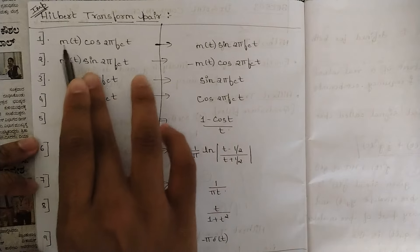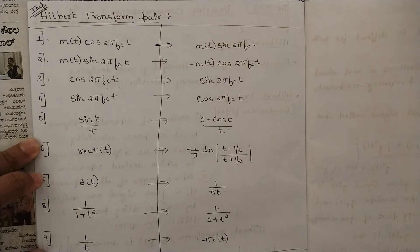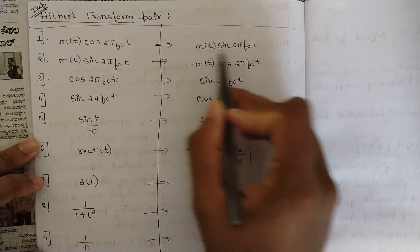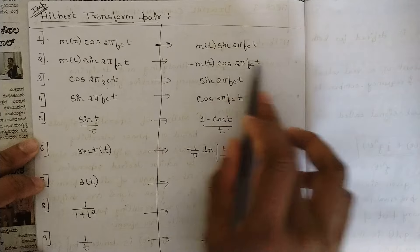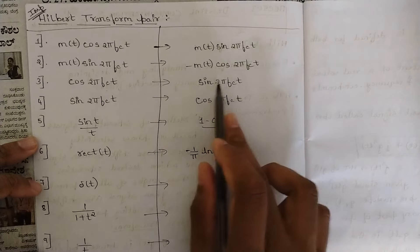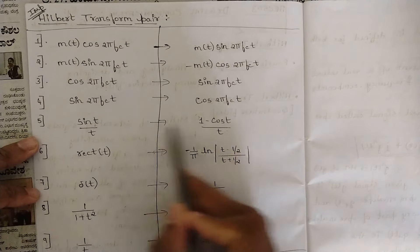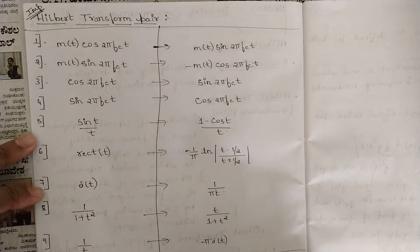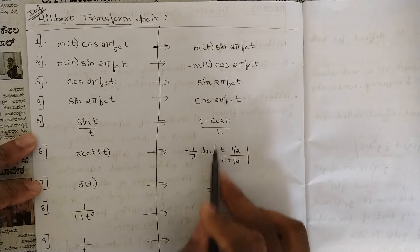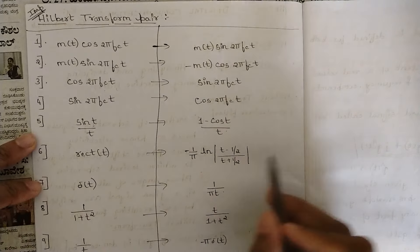The Hilbert Transform pairs are as follows: (1) m(t)cos(2πf_c t) ↔ m(t)sin(2πf_c t); (2) m(t)sin(2πf_c t) ↔ −m(t)cos(2πf_c t); (3) cos(2πf_c t) ↔ sin(2πf_c t); (4) sin(2πf_c t) ↔ −cos(2πf_c t); (5) sinc(t) = sin(t)/t ↔ [1 − cos(t)]/t; (6) rect(t) ↔ (1/π) ln|(t − ½)/(t + ½)|. Note: ω_c = 2πf_c can be used interchangeably.